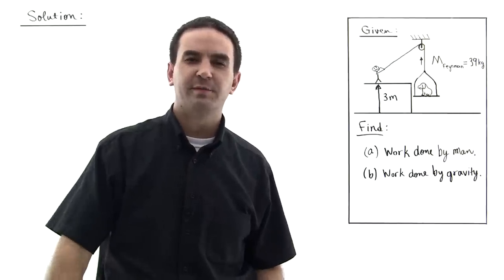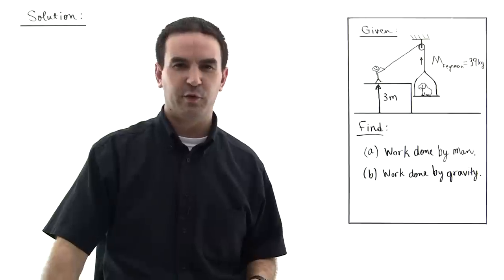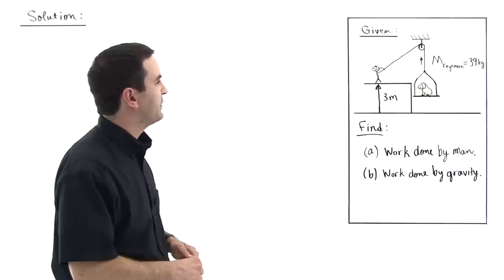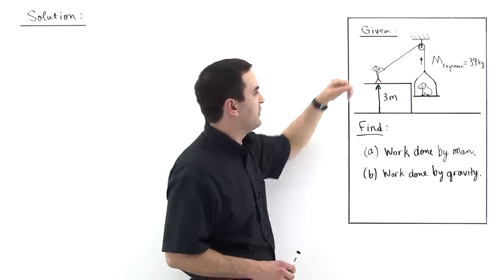This tutorial will discuss concepts of positive versus negative work. So a Basset Hound named Feynman is being pulled up on a carriage to this platform at a height of 3 meters.